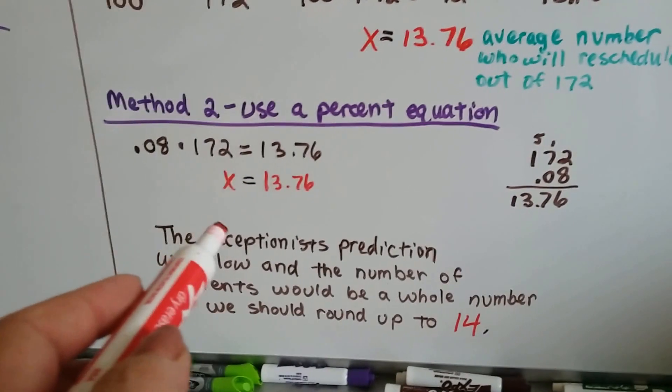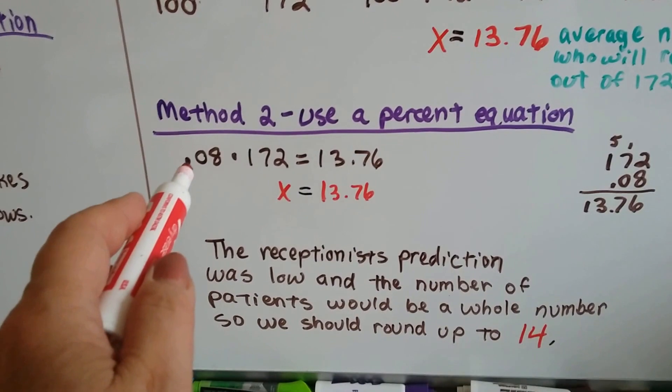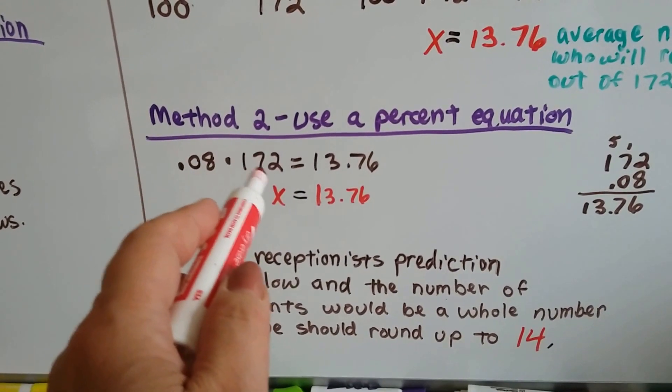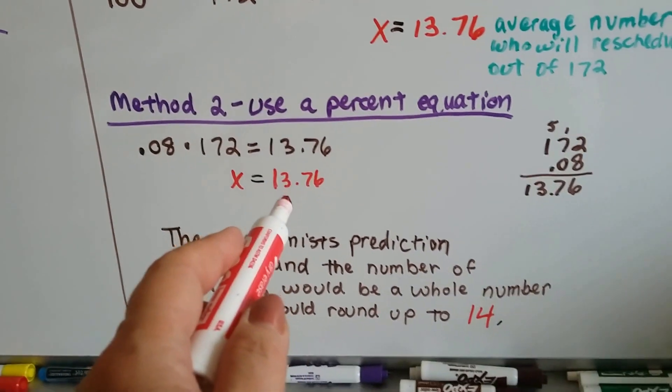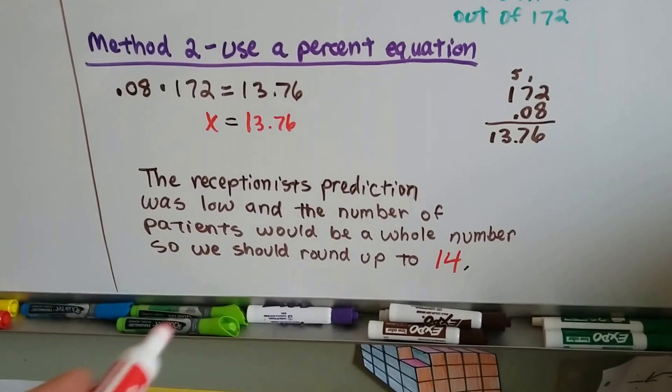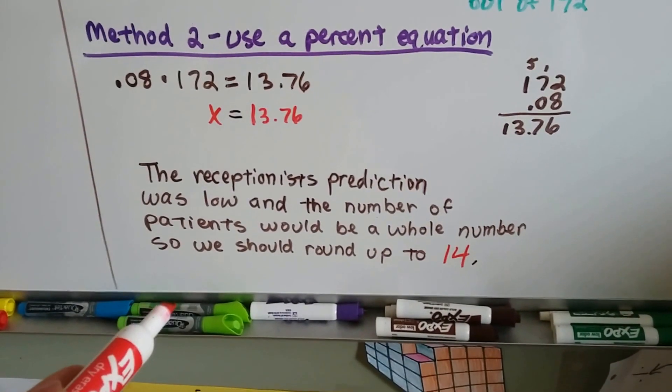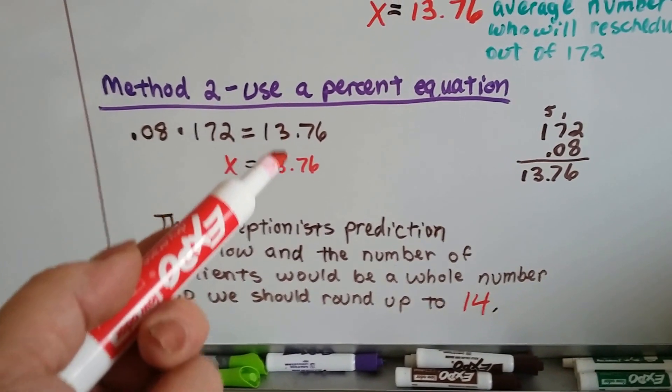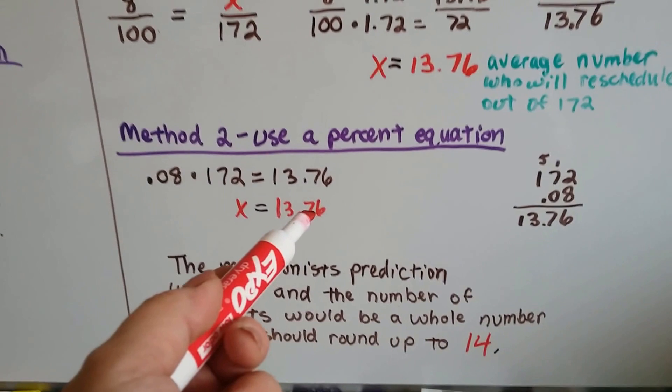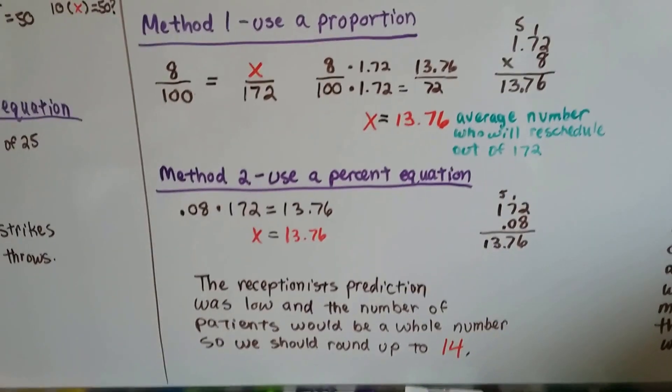So here's method 2. We use the percent equation. 0.08 times 172. And that would also be 13.76. Now the receptionist's prediction was low, and the number of patients would be a whole number, so we would actually round that up to 14. Because you can't have 76 one hundredths of a patient, can you? No.